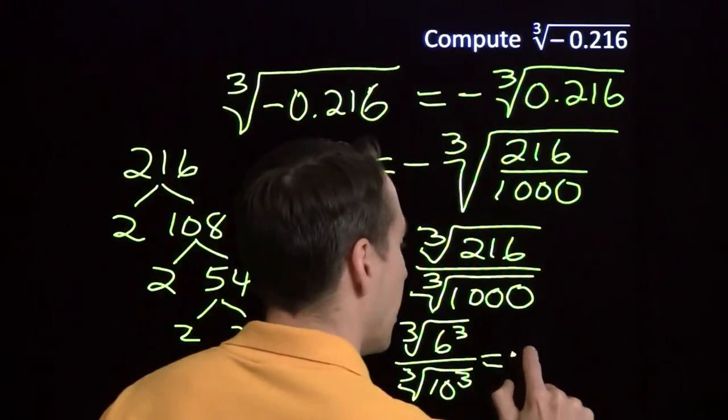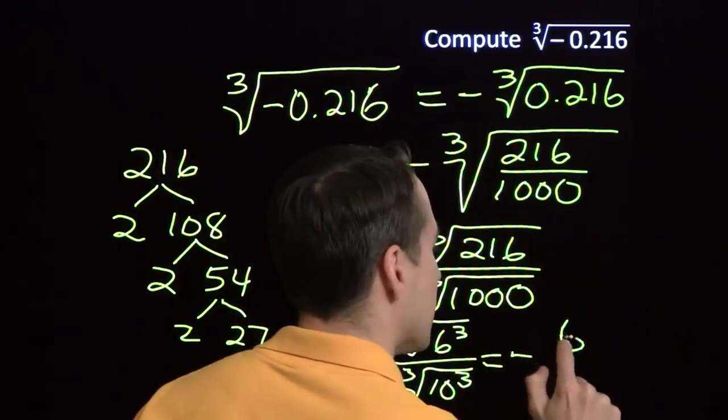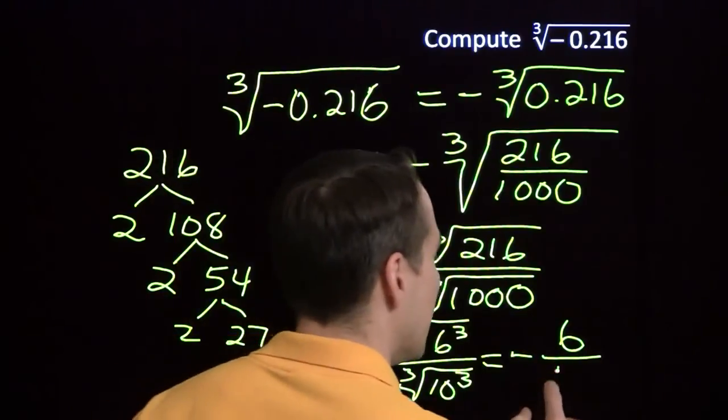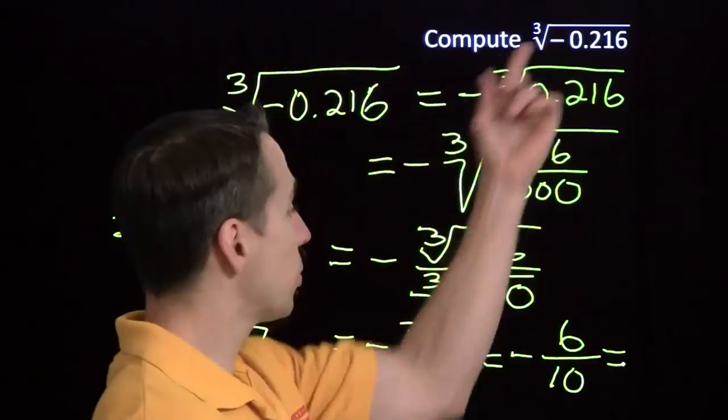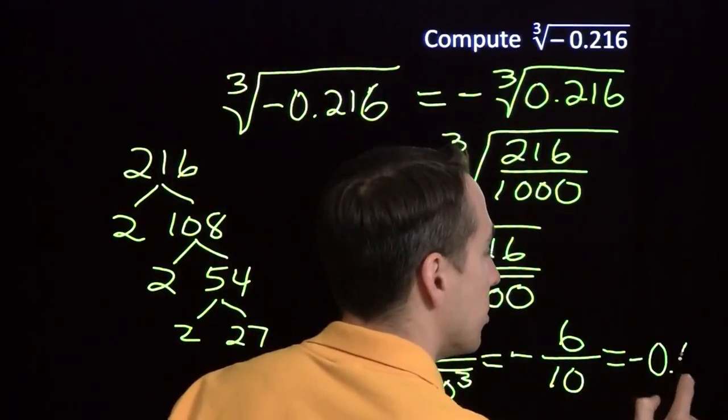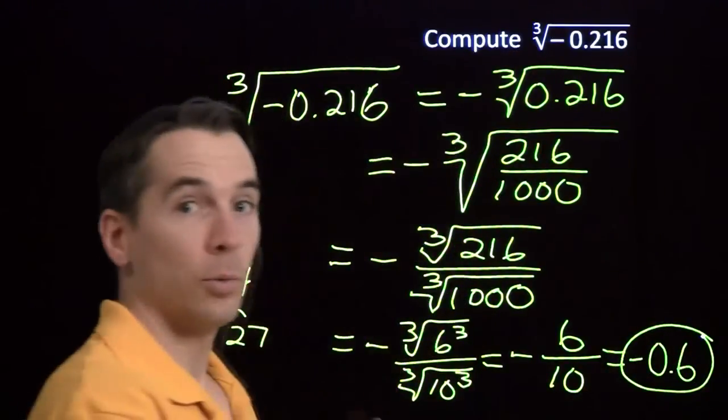Of course, cube root of 6 cubed—you cube 6 to get 6 cubed. The cube root of 10 cubed is 10. We have negative 6 over 10. Question's written as a decimal, so we'll rewrite our final answer as a decimal as well. And we're done.